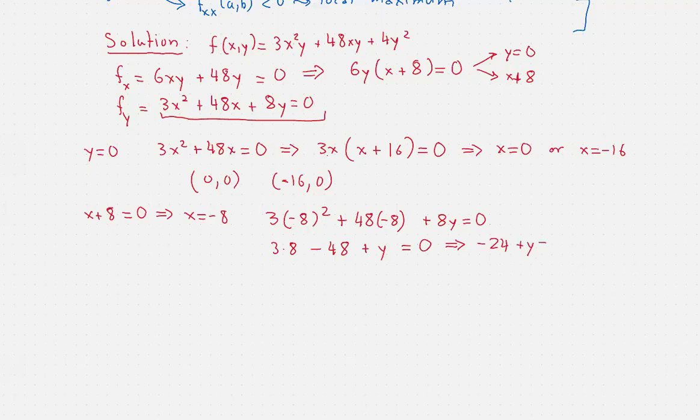So we obtain another critical point: (-8, 24). This means we have to study these three critical points. The process of finding the critical points is complete. What we want to do now is find the second order partial derivatives.